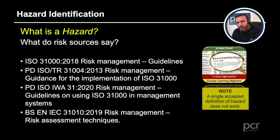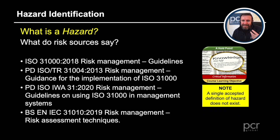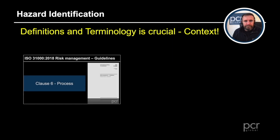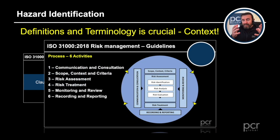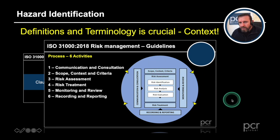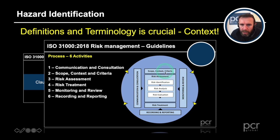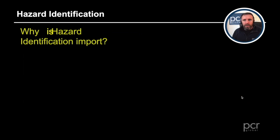A single accepted definition of hazard does not exist. Moving on to the risk management process in ISO 31000 — these slides are from a different training course, but they are included here to look at context. We can use this risk management process in health and safety, security, and environmental management. It is a framework, and we can lean on it in any discipline because of the concept of context — the scope, the context, and the criteria.